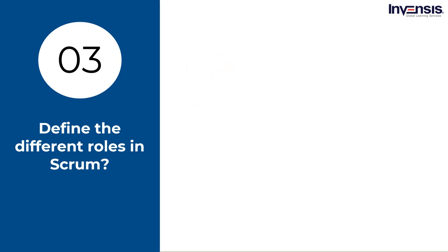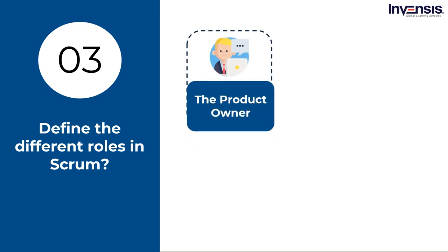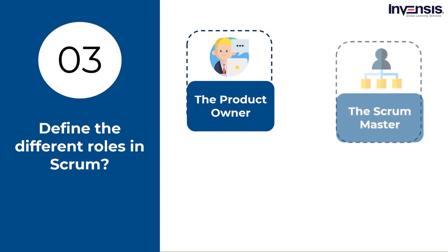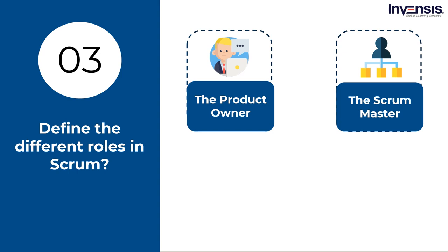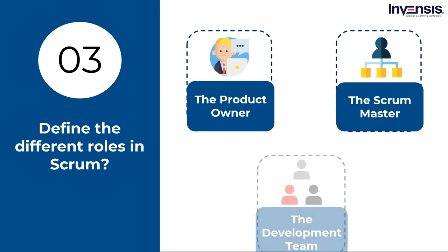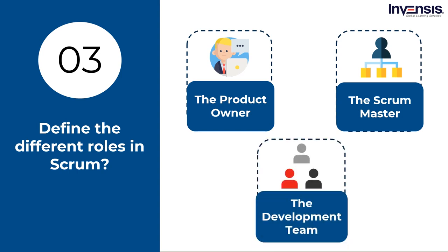Define the different roles in Scrum. First is the product owner — they represent the customers and stakeholders, communicate the team's overall mission and vision for the product, monitor the product backlog, and accept completed work after each increment. Second is the Scrum Master — they ensure the team works according to Scrum rules, performs at their best, and handles removing roadblocks, organizing meetings, and assisting the product owner with the product backlog. Third is the development team — individuals who do the work and develop the products.